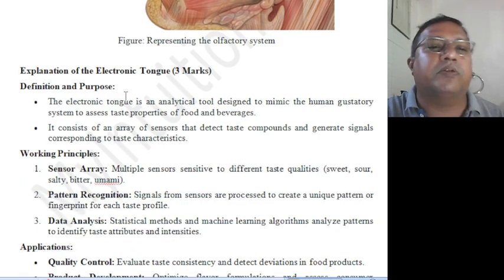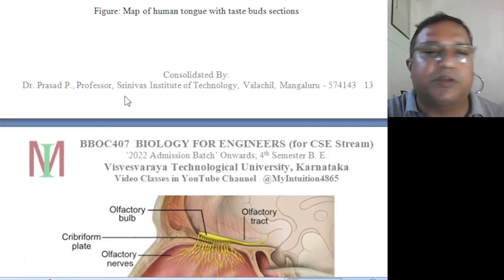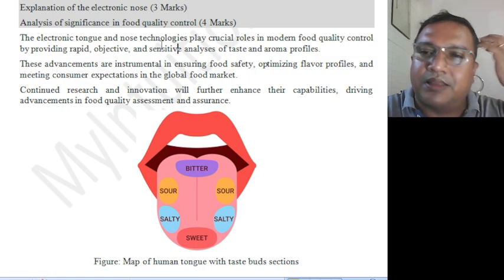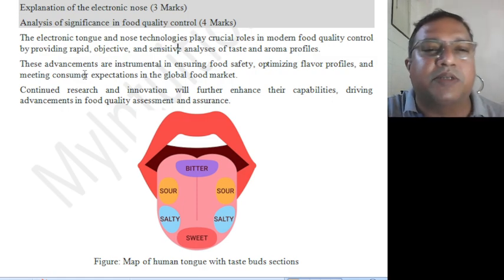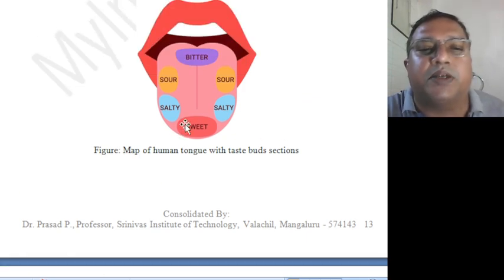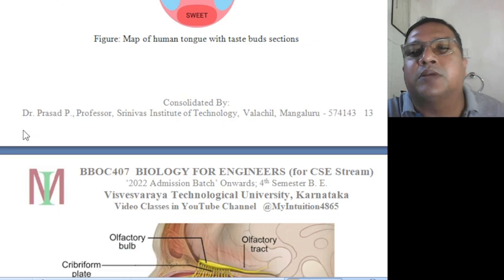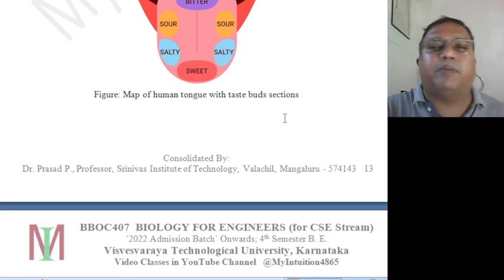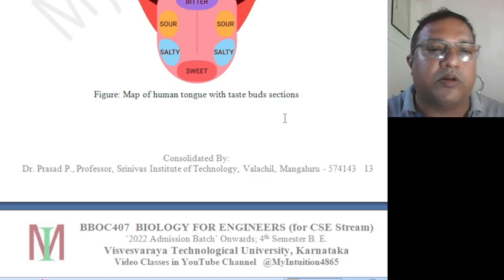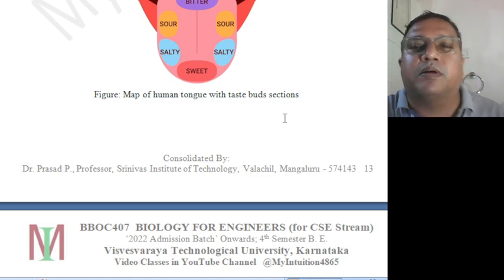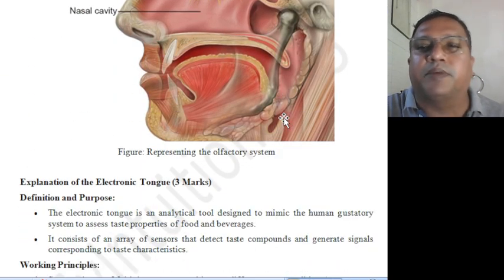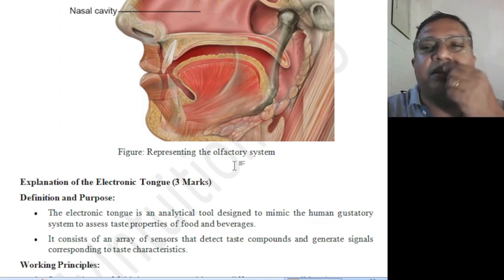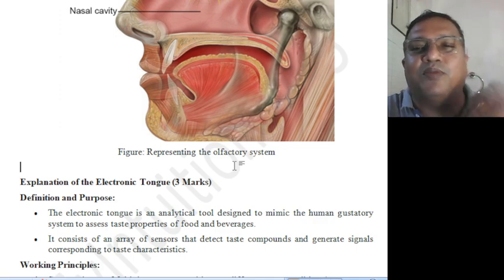The electronic tongue and electronic nose are nothing but sensors. Engineering students of 4th semester know well about sensors. Different sensors are required to sense sweet, sour, and bitter. The sensor material is prepared exactly mimicking that function, and it can be used in food quality control and many other related things — even detecting the taste of unknown substances before direct human contact.